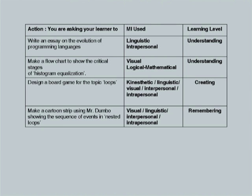If I ask you to make a cartoon strip using Mr. Dumbo showing the sequence of events in a nested loop, I have tapped multiple intelligences — but my learning level, since it is simply on a sequence of a nested loop, is merely Remembering. So while the MI tapped could be as creative as making a cartoon strip, the level can still be at the fundamental level of Remembering.